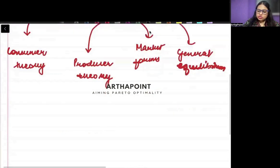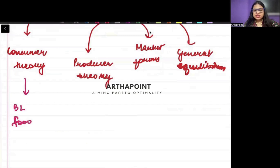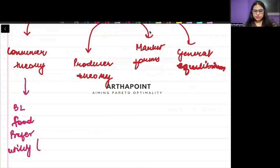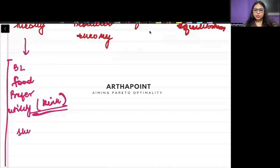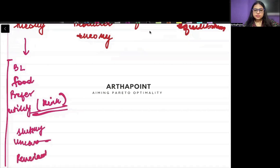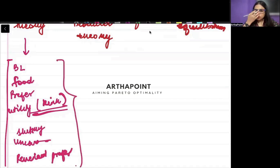When we talk about consumer theory, you need to study budget line, the food stamp program, what are preferences, different forms of utility functions including kinked utility functions. Then you need to study the Slutsky equation, uncertainty, and revealed preference. All of this constitutes your microeconomics consumer theory.